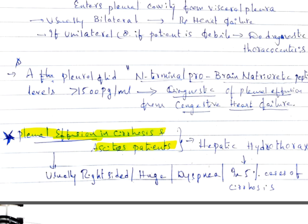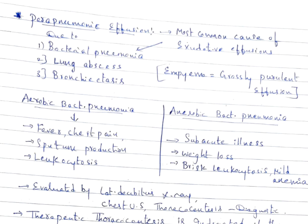Pleural effusion in cirrhosis and ascites patients is also called hepatic hydrothorax. It is usually right-sided and huge. Patient presents with dyspnea. In 5% of cases of cirrhosis, it is present.